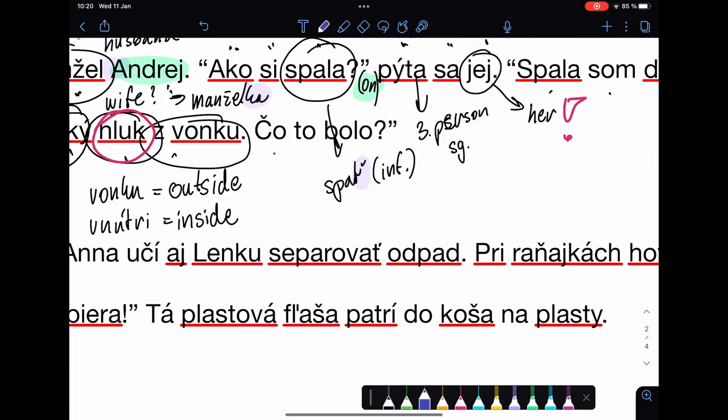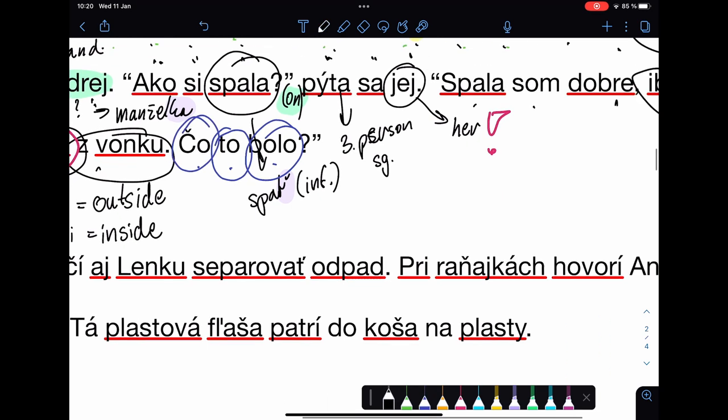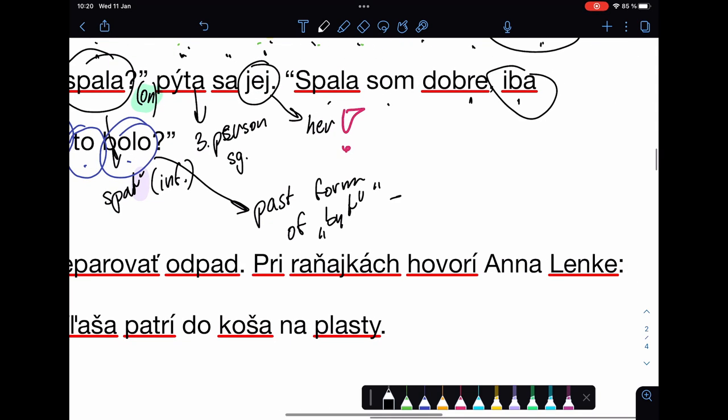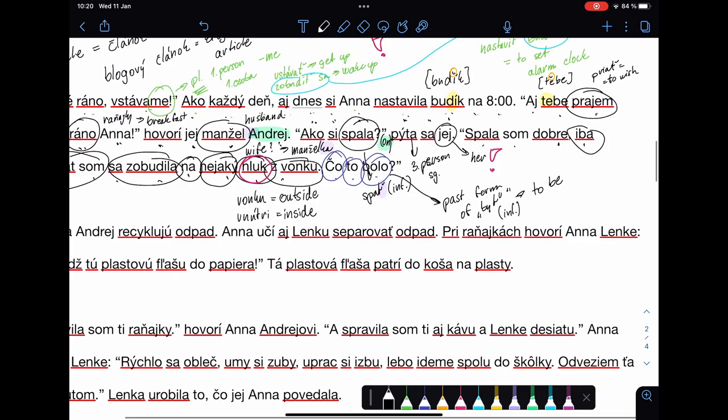Čo to bolo, what was that? That's to, bolo was, a čo what. Bolo, that's past form of byť. Do you know what byť is? That's to be. Again, in infinite form.